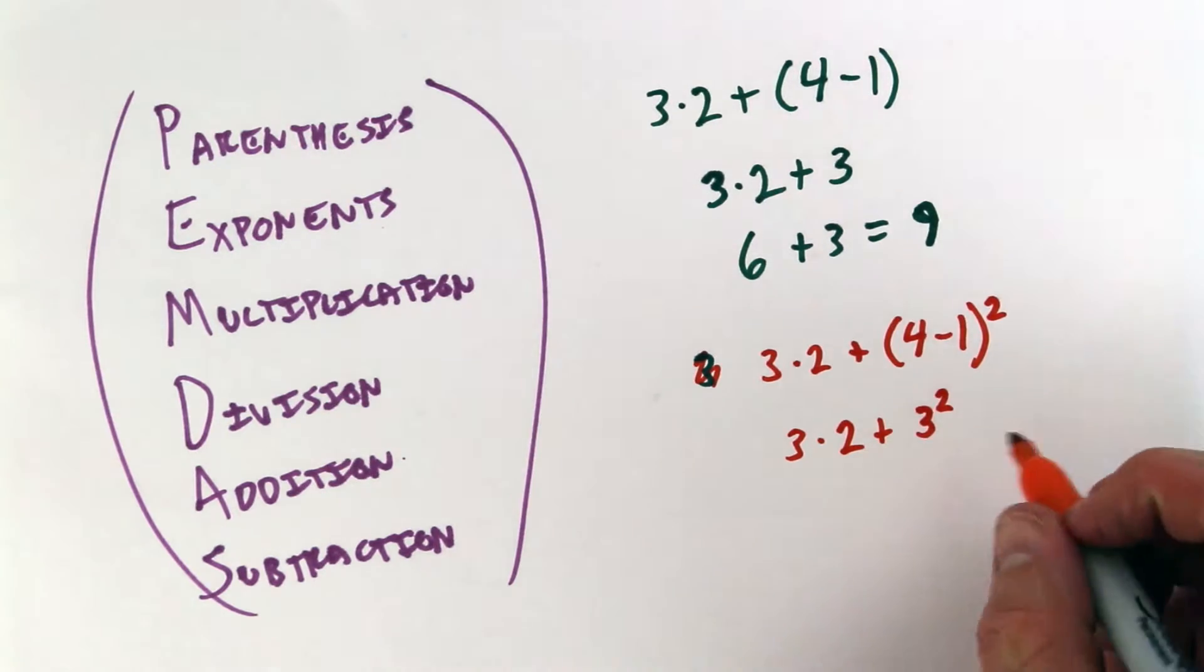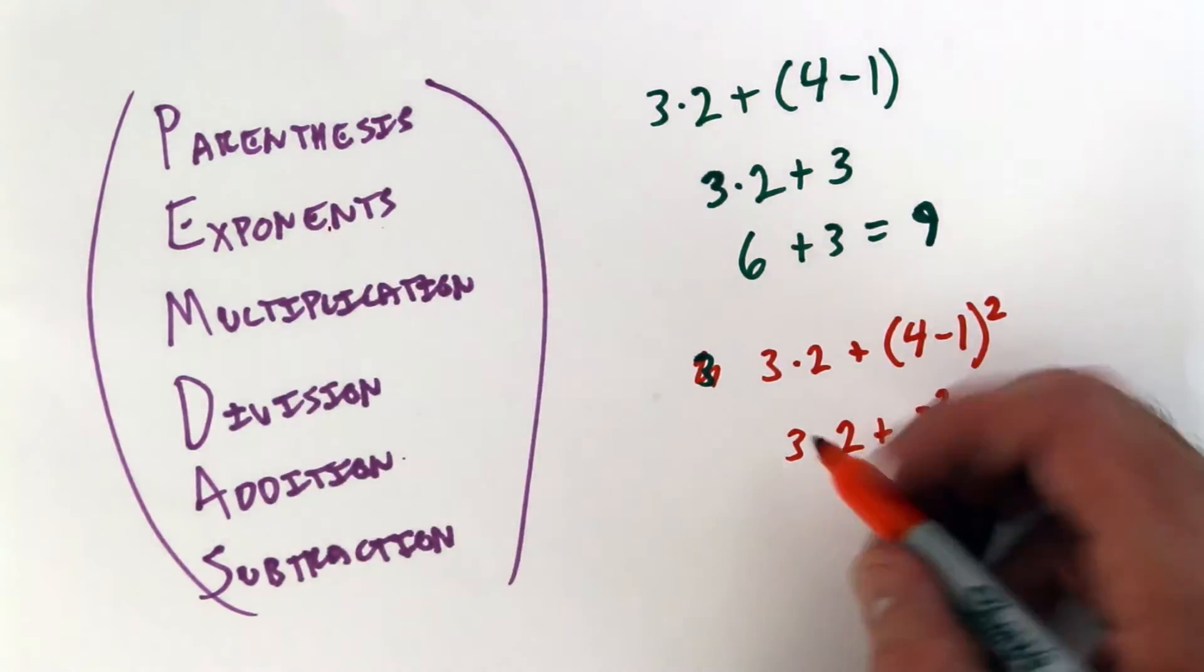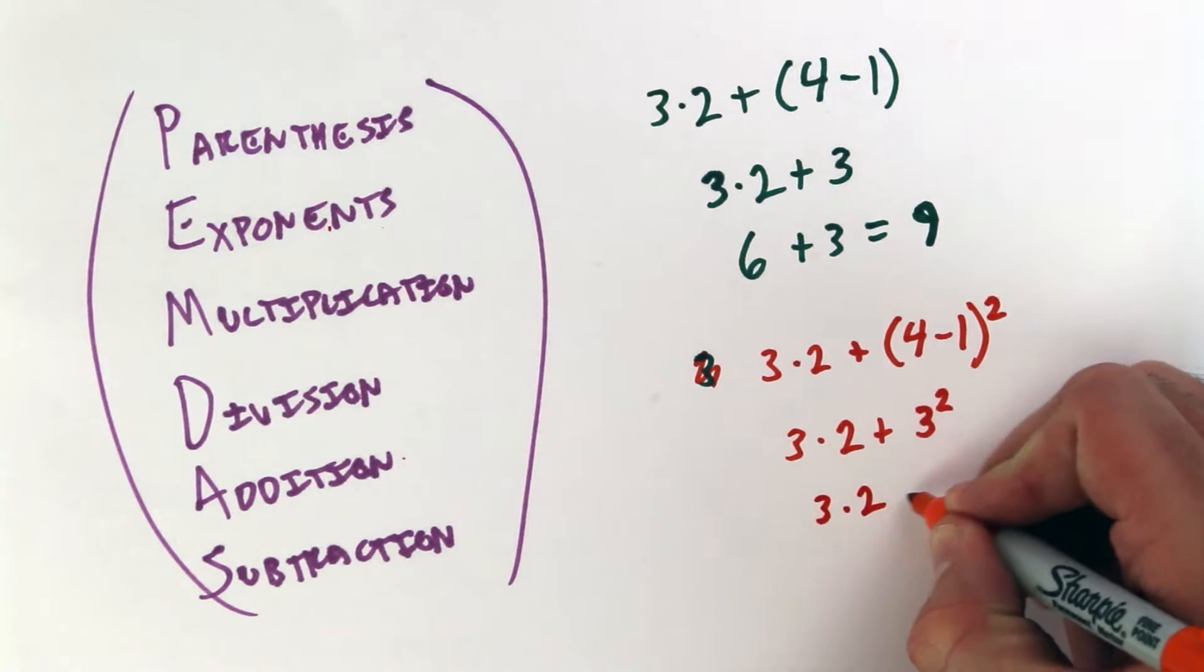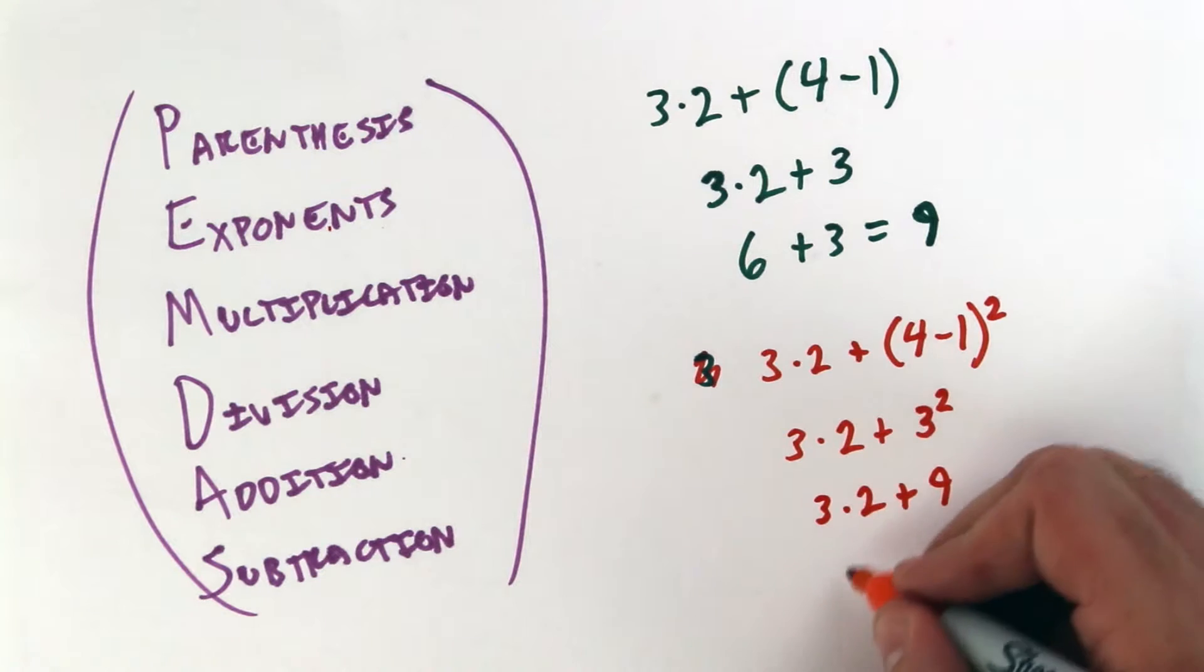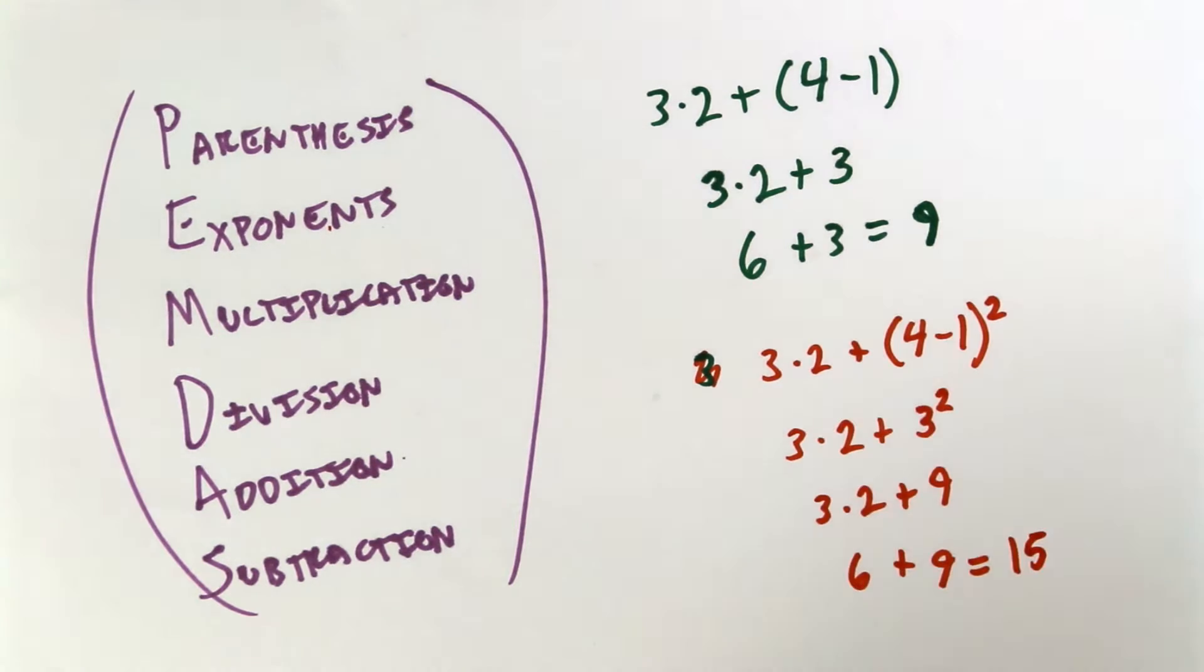Now we go to our exponent. That's what's next. Parentheses and exponents. 3 times 2 plus 3 squared, which is 9. 3 times 2 is 6. So we have 6 plus 9. Do our addition. 15.